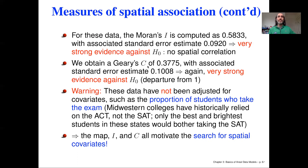Similarly with Geary's C, remember the null value is one — that would correspond to no spatial covariance relationship. We're getting a value of only about a third of one, suggesting that spatially adjacent locations have much less variance than you would expect by chance. The standard deviation on that estimate is quite tight, again giving strong evidence against the null hypothesis.